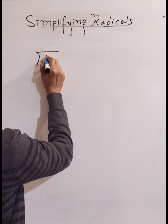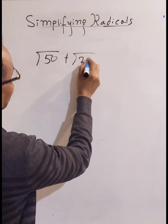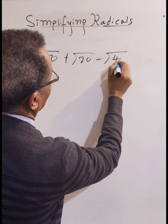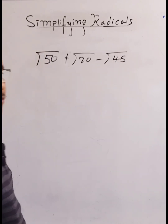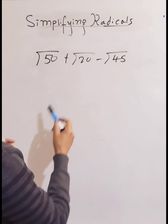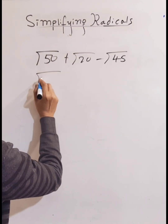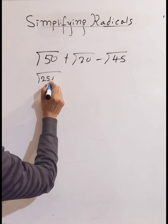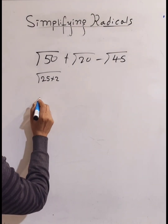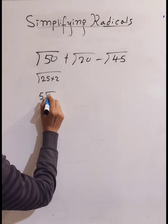Let's do the next one: square root of 50 plus square root of 20, take away square root of 45. Let's simplify one by one. Square root of 50 is 25 times 2, and square root of 25 is 5, so that gives us 5 root 2.